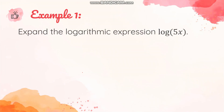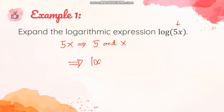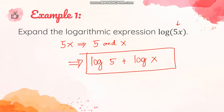Example number one: expand the logarithmic expression, logarithm of 5x. In this case, you just have to look at the argument, which is 5x. Identify the factors of 5x — the factors are just 5 and x. You multiply 5 and x to get 5x. Since the argument is factorable, we can separate the factors into two logarithmic forms. So what we will have now is logarithm of 5 plus logarithm of x. This is the expanded form of the given logarithm.